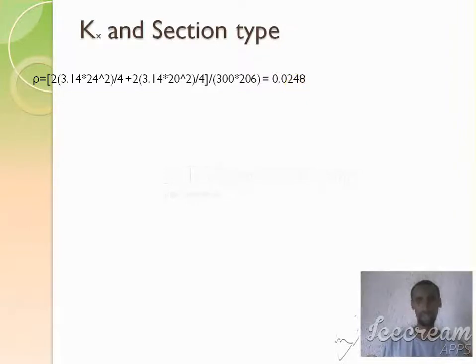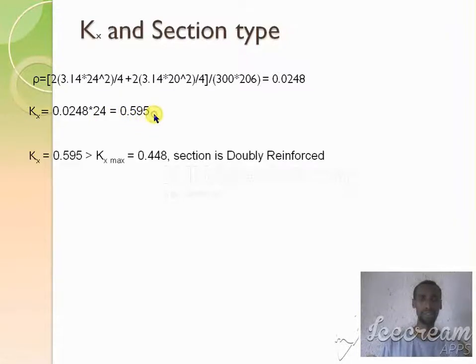This is ρ calculated or actual row or area ratio. Then you can calculate Kx using ρ. That is ρ multiplied by M. M is 24, Kx becomes 0.595. Now the value Kx calculated is greater than Kx max which is 0.448. So here we say that the section is doubly reinforced. It is not singly reinforced.